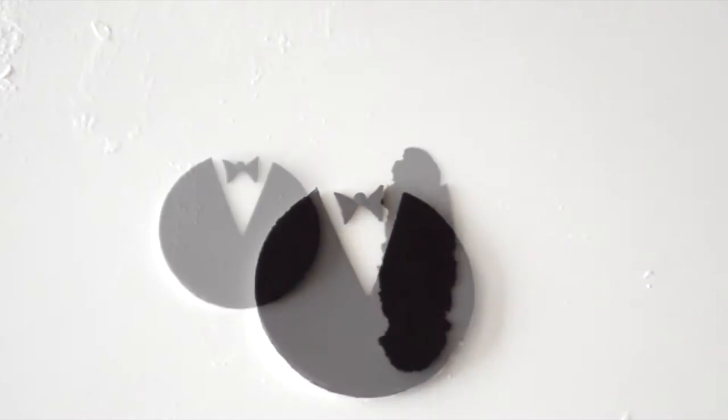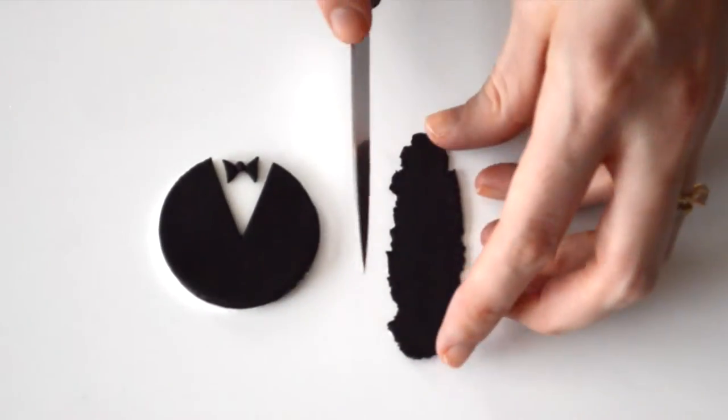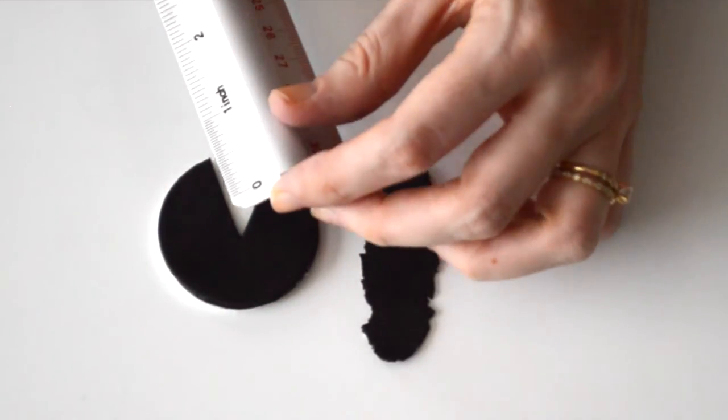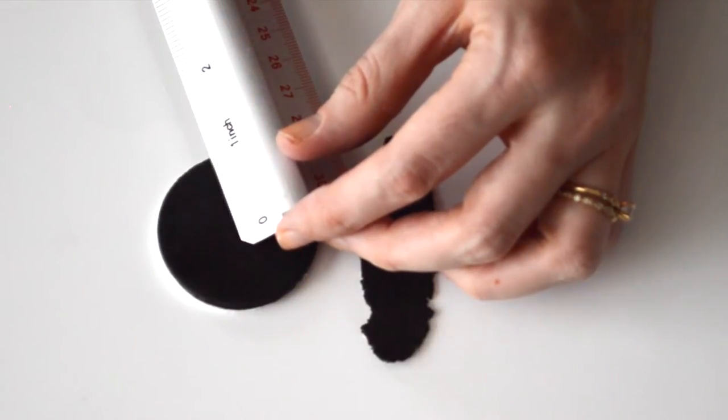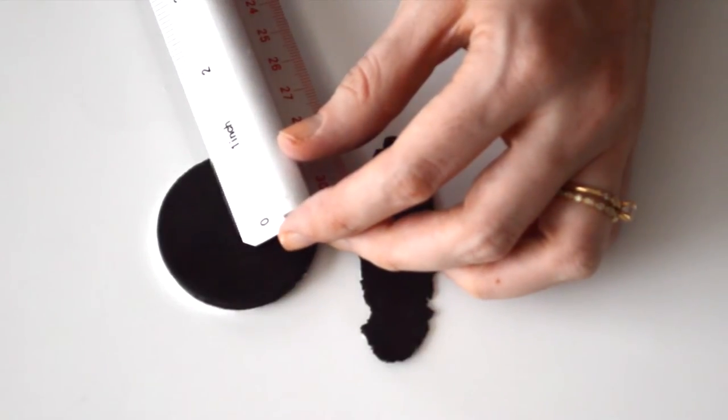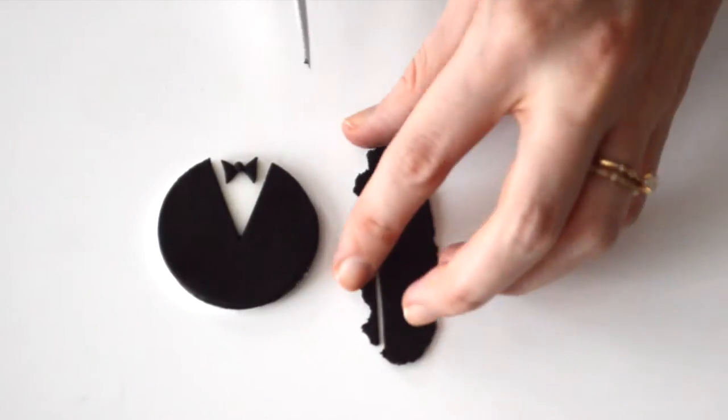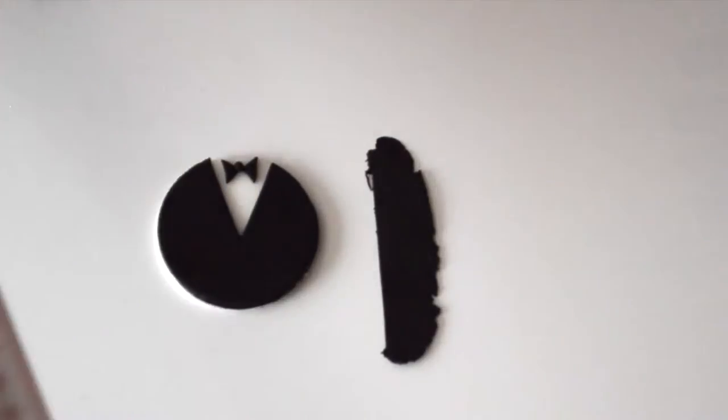Very nice. Now we just need to make sure we have some collars on the side for our sweet little tuxedo. First off we want to measure how long the side is so that we make sure our collar is long enough. This hits just about one inch like we measured, and we're just going to make those about as thick as we want, and then measure to make sure.